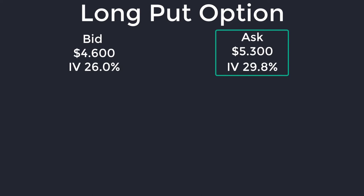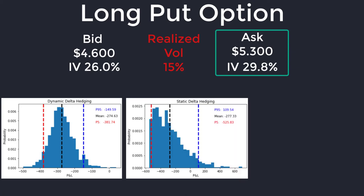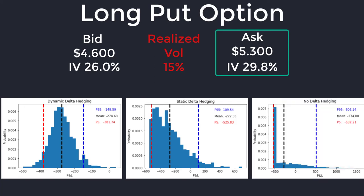Now we're going to consider: if we've bought implied volatility at 30%, what happens if realized volatility underperforms at 15%? Well obviously we've bought high and realized low, so we're going to lose money. The dynamic delta hedging probability distribution has a mean loss of minus $274, and it's still pretty tight bounds. If you only hedged when you entered the position with a static delta hedge, then you have much worse downside at the P5 level. It's similar when you consider no delta hedging at all — with 1,000 scenarios you're going to have a wider distribution of outcomes. We've got minus $532 for the P5 but a potential upside of $506 with no delta hedging.